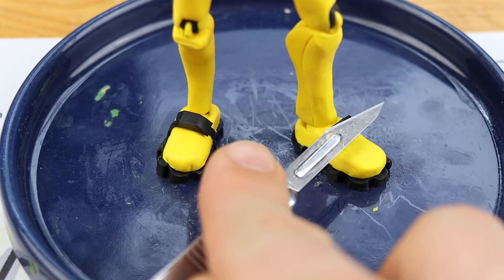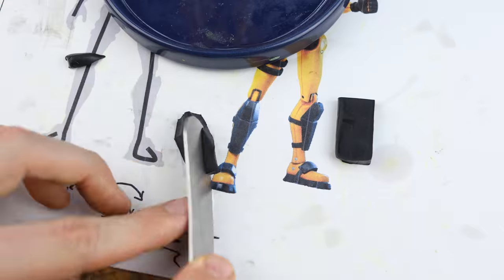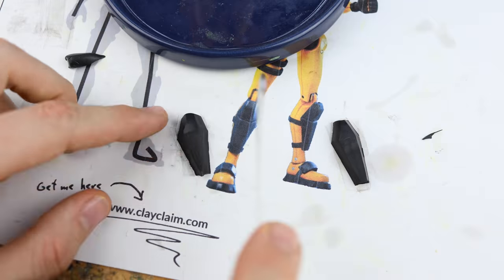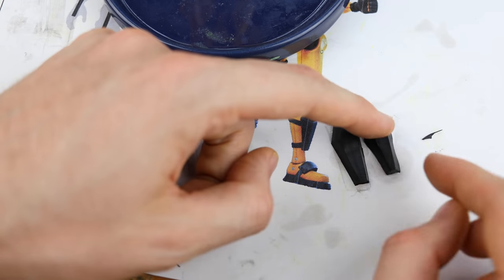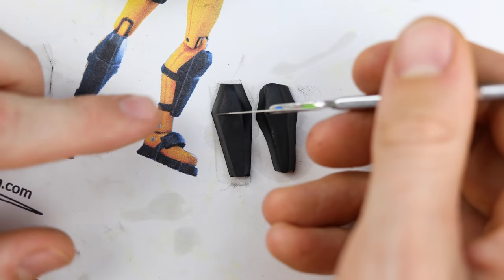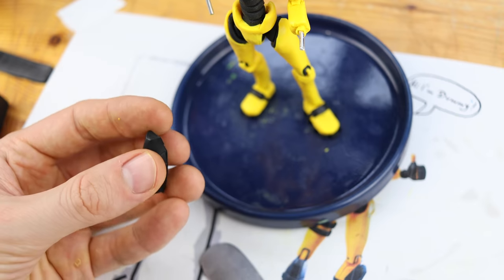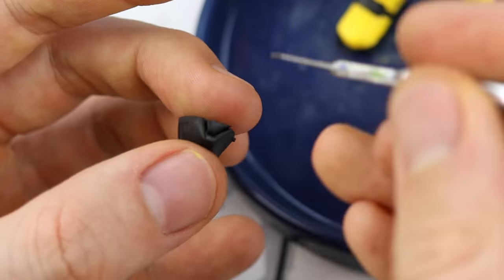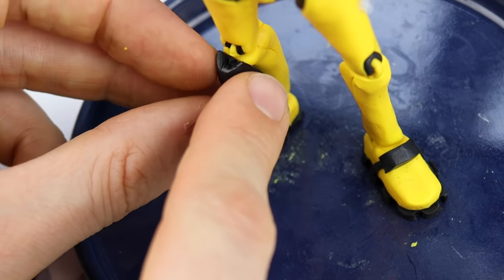Back to the creation, we are adding some beautiful details with black clay. We have on the shoes, for example, all these leg protections which are so characteristic for Fortnite skins. So we can't leave these out. I also used a knife to get these sharp edges.